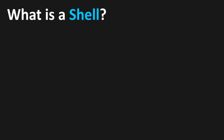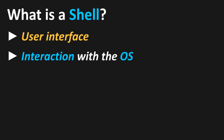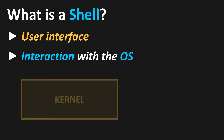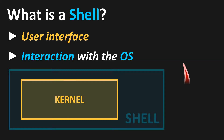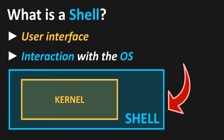First of all, we clarify the question: what is meant by a shell? In simple terms, it is an interface through which a user interacts with the operating system. But why is it called shell? The kernel is the operating system's core, and the shell forms the outer skin, so to speak.